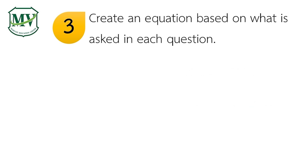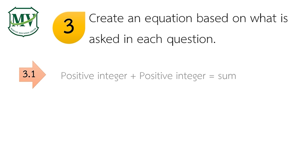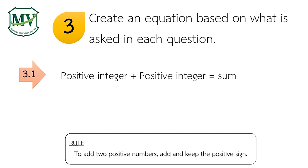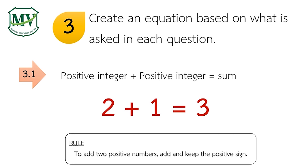Now let's answer question number 3. In this part, you have to create an equation based on what is asked. Positive integer plus positive integer equals sum. Your answers may vary. Define the sum of two positive integers: add the numbers and keep the same sign. For example, 4 plus 3 equals 7, or 2 plus 1 equals 3.